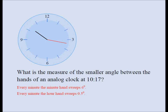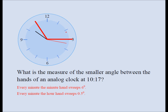Let's now address our main problem. We need to find out the angle between the hands of our analog clock exactly at 10:17. We know that the angle from the 10 to the 12 — that is, 30 plus 30 plus 30 plus 30 — has to be 120 degrees.